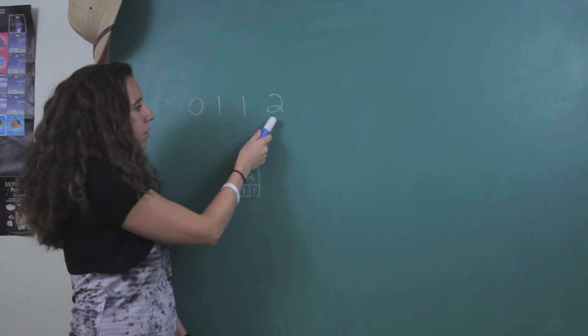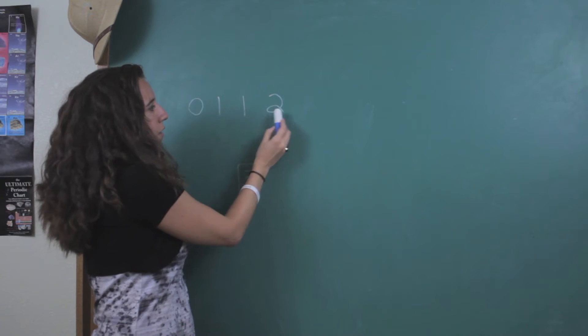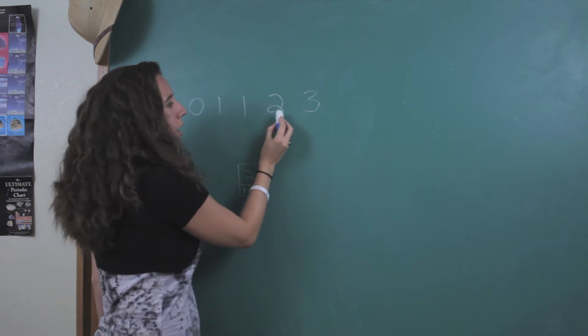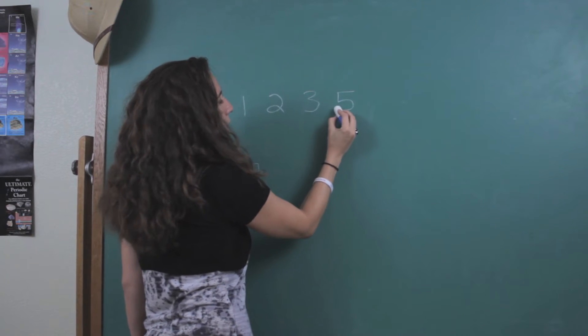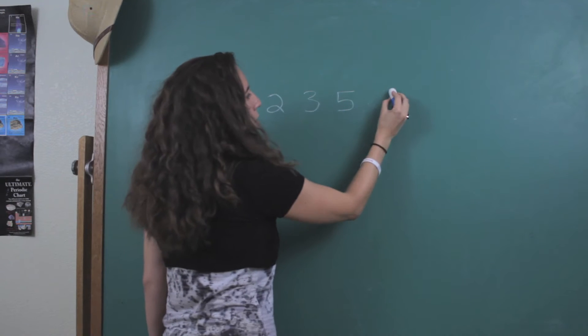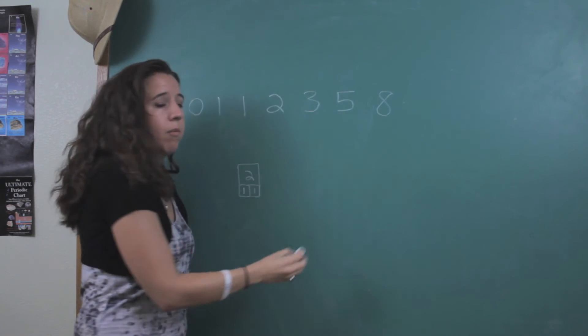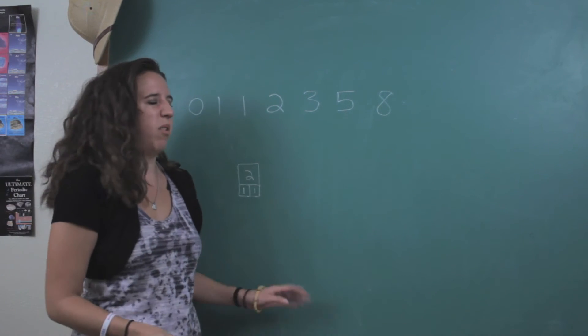So one plus one is two. So then of course, if we add these two, we get three. And if we add these two, we get five. And if we add these two, we get eight. And we could go on forever doing that, but we'll stop at eight.